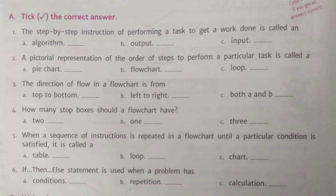The step by step instruction of performing a task to get a work done is called a dash. Options are algorithm, output, and input. As we know, algorithm is the step by step instruction of performing a task. So we can tick on option A, algorithm.